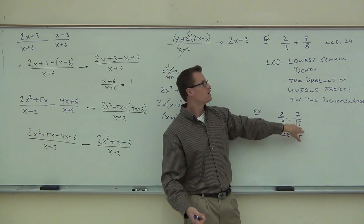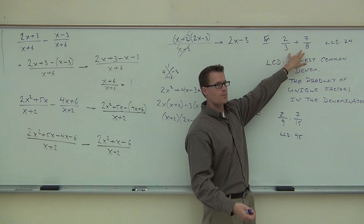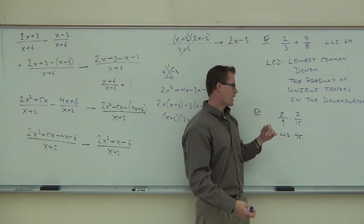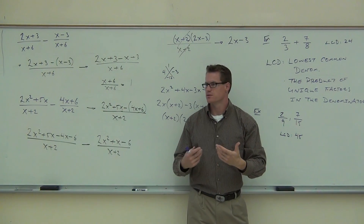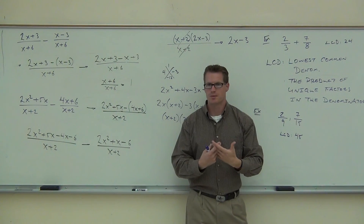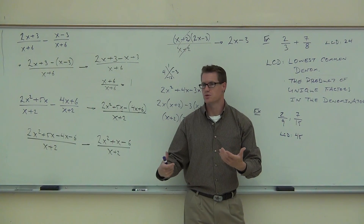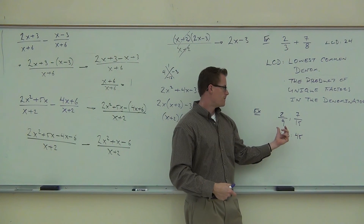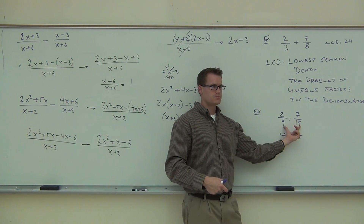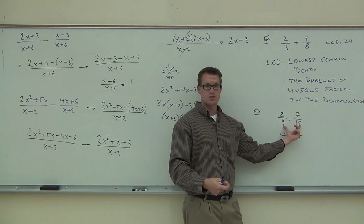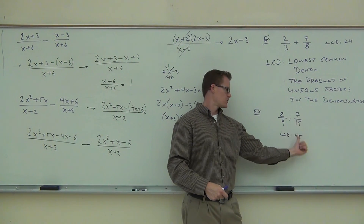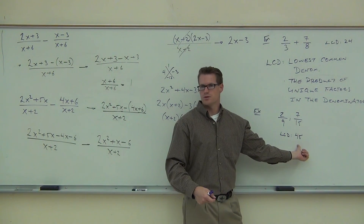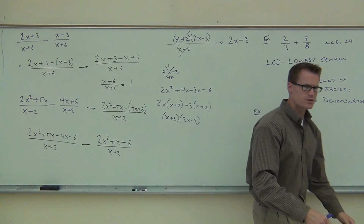Now try finding the LCD for the next example on your own. Start with the larger denominator, find multiples of it, and the first one that the other denominators divide into evenly is your LCD. We'd start with 30 — no, go to 45. Did you find 45? You'll notice that in the first example the LCD was the two numbers multiplied together, but here that's not the case. The difference is those denominators had a common factor of 3. You can take out that common factor — multiply the two numbers together and divide by the common factor — and you'll get your LCD.